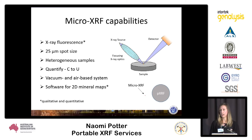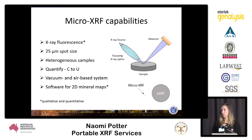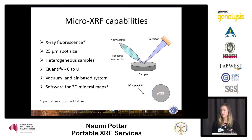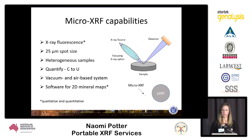The ability to analyze heterogeneous samples, because of that small spot size, is enabled by the use of fundamental parameters. So rather than using a standard-based system, you're using mathematical algorithms to determine the chemistry. The quantification can go from carbon to uranium. It's able to measure those lighter elements below sodium because it has a vacuum-based system, so it can pick up the energy released from those lighter elements.